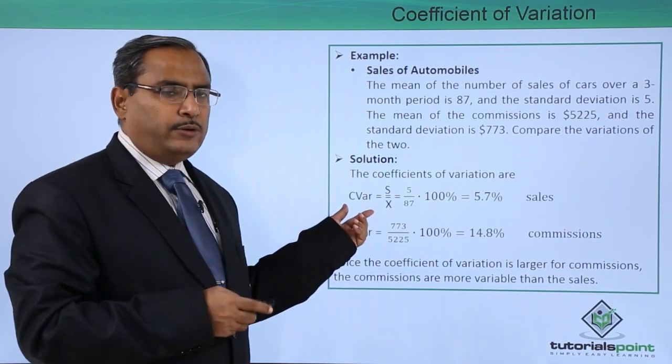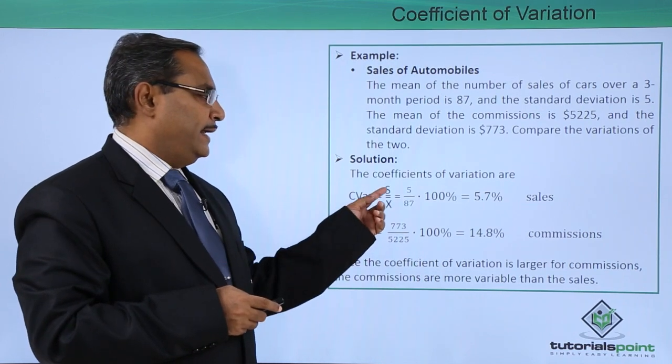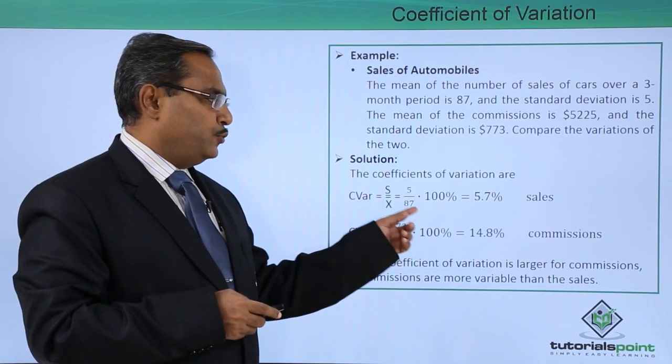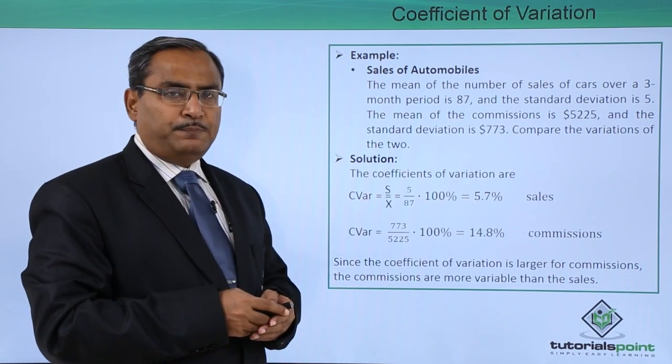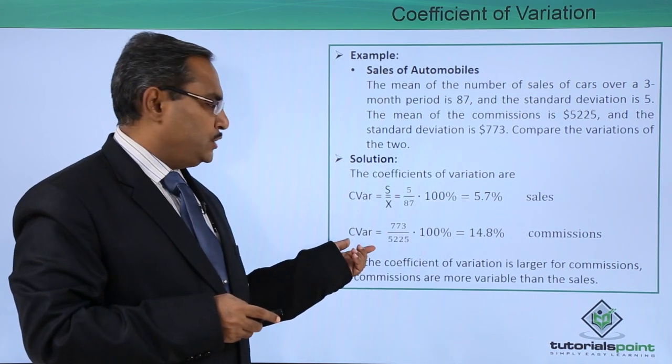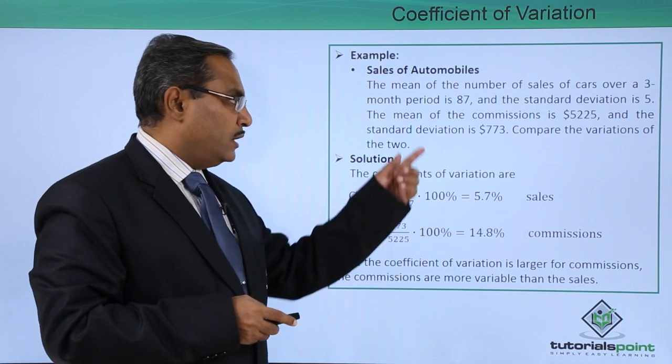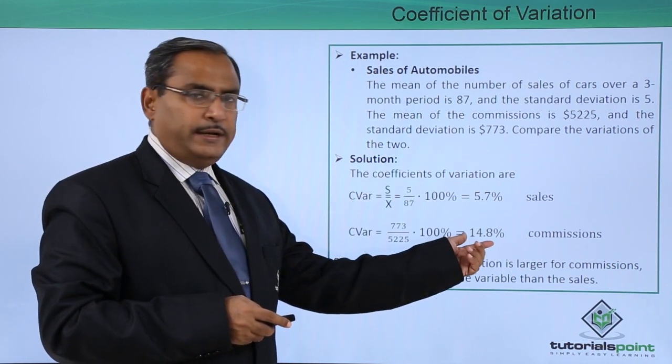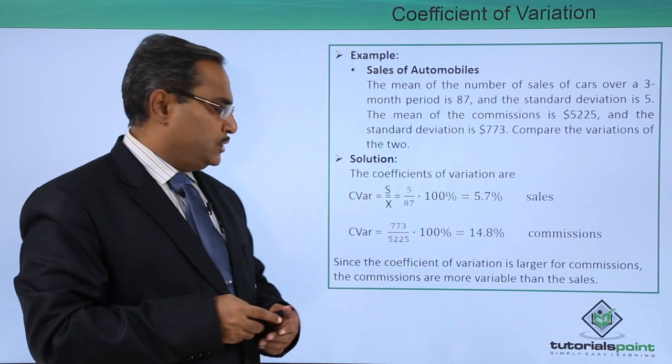So now, it is quite obvious that we will be calculating the CV as s by x̄. So, putting this value I am getting 5.7 percent, and in case of CV for commission, putting the respective values from the problem we get 14.8 percent.